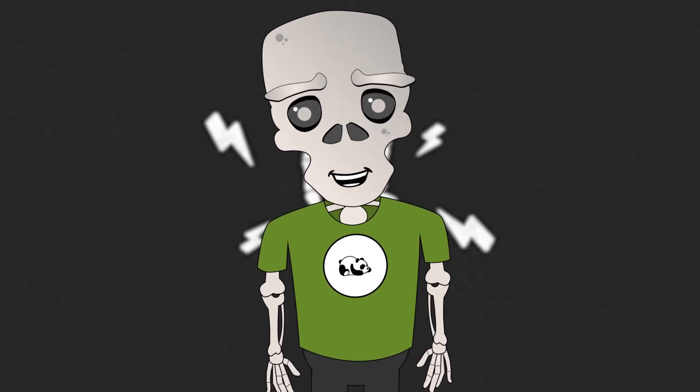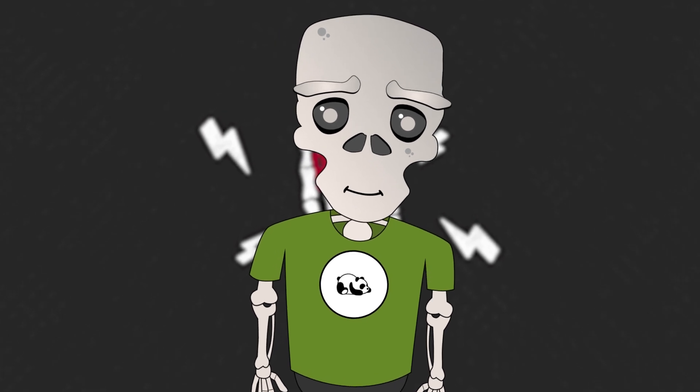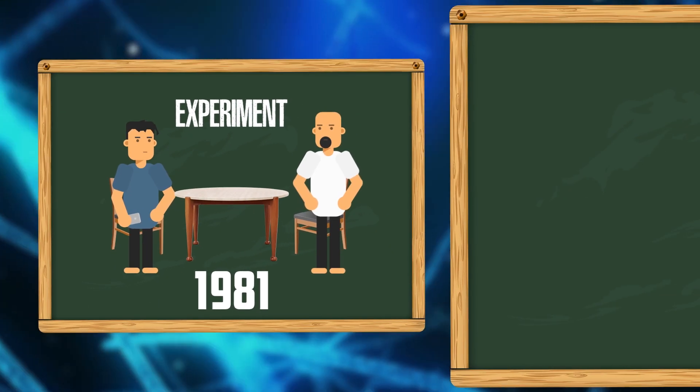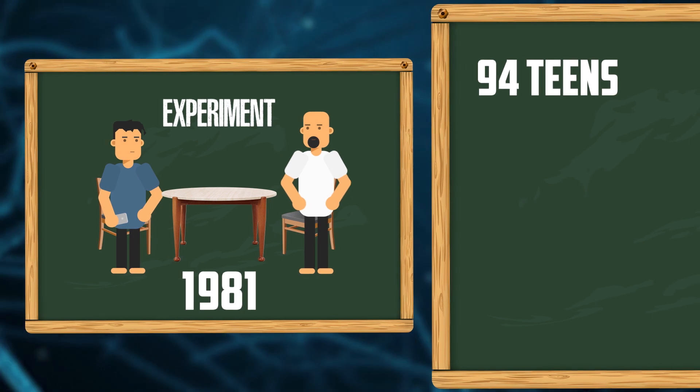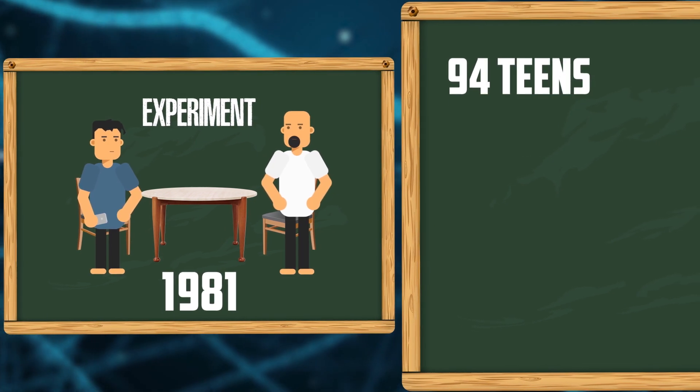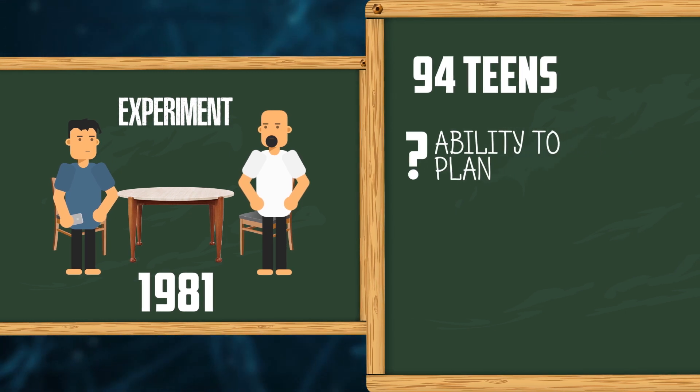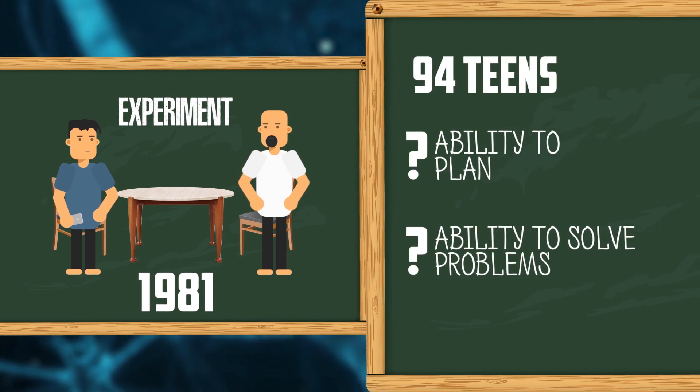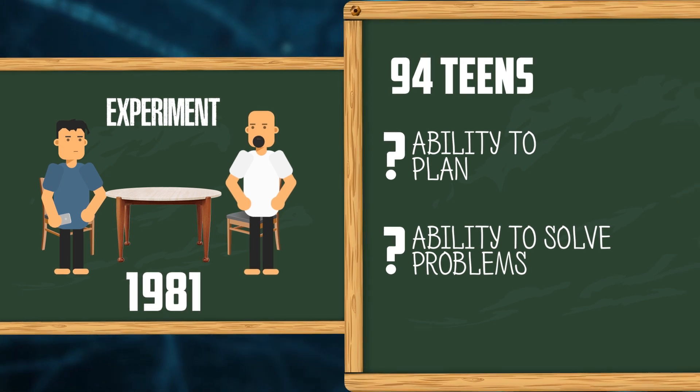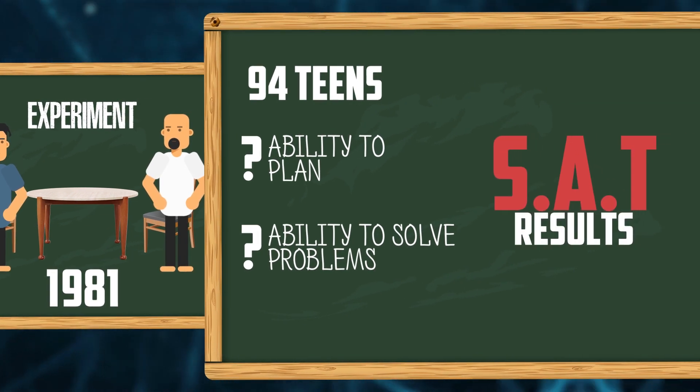And then, the most incredible thing happened. In 1981, he was able to contact 94 parents. He asked a variety of questions about the behavior of the teenagers. For example, he was interested in their ability to plan and solve problems. There were also more measurable indicators. These were the results of a standardized test.